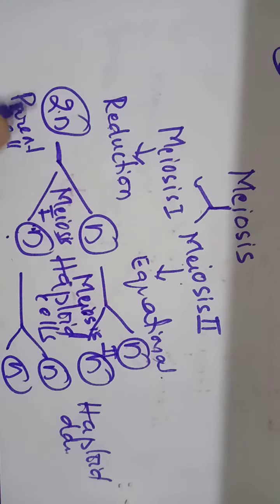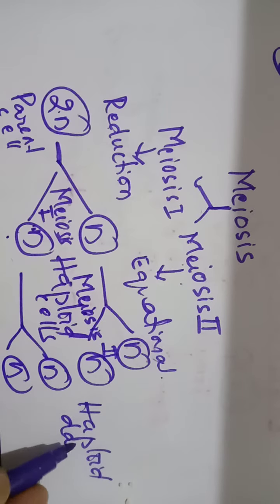That means, at the end of meiosis, the 2n parent cell gives rise to four haploid daughter cells.